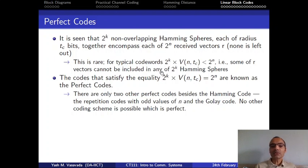Remember, perfect code is the one that has this equation with equality instead of less than sign. The other perfect codes are the repetition codes with odd values of n and the Golay code. There is no other coding scheme which is perfect. There is always, for the other schemes, we cannot have the equality. There will always be a less than sign over here.